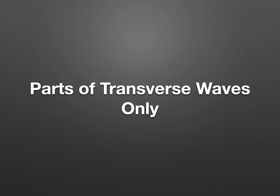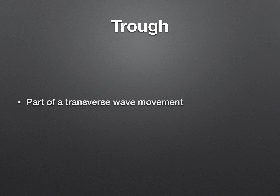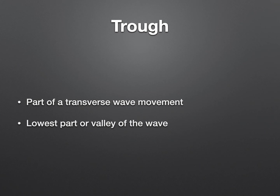Now let's talk about the parts of a transverse wave only. You'll find a crest in a transverse wave movement — it's the highest point or peak of the wave. You'll also find a trough in a transverse wave movement only, and that's the lowest part or valley of the wave. We labeled both of those in our models today.